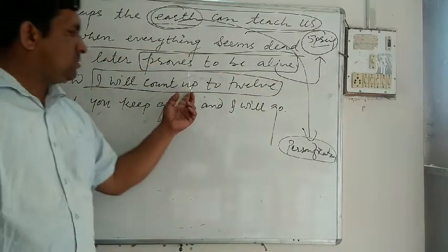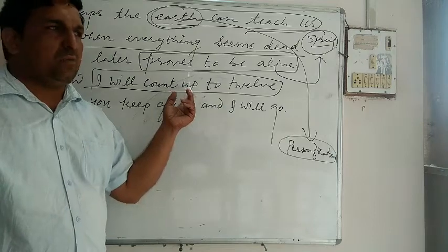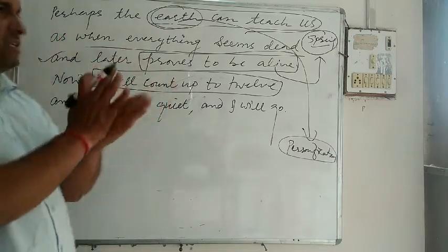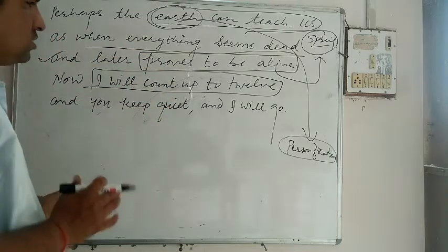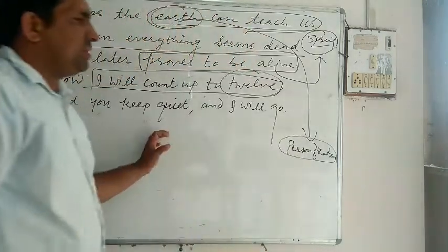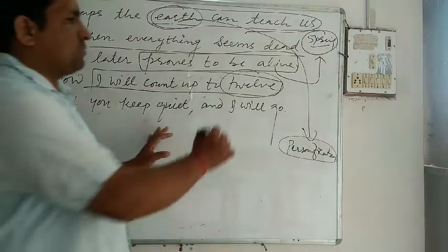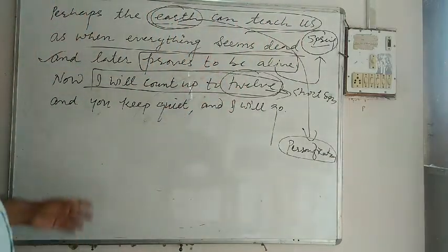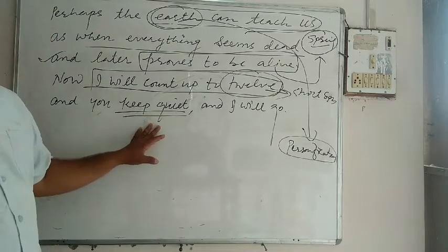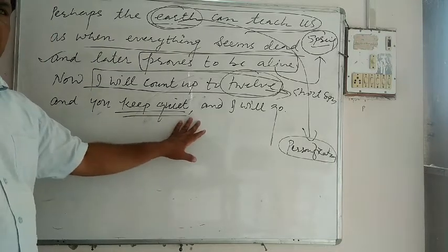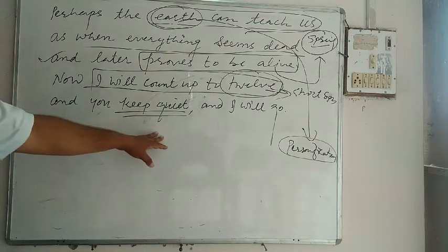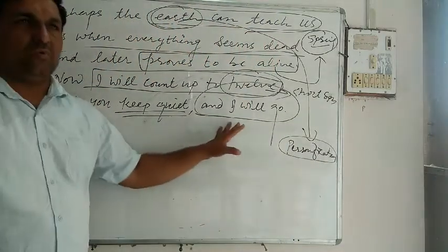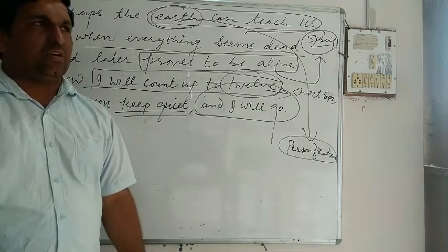Now the poet wants to say I will count up to twelve. Now I will start to the process of quiet introspection. Now it is the high time to remain silent. It is the time we have to start the process of quiet introspection. Now I will try to count up to twelve. Twelve is very significant, short span of time. And in the short span of time we have to start quiet introspection. You keep quiet, the poet urges to the readers, the humanity, that please be silent and take a little bit of time for quiet introspection. And I will certainly go, means I will certainly be with you with the process of quiet introspection to create the feeling of mutual understanding among the human society.